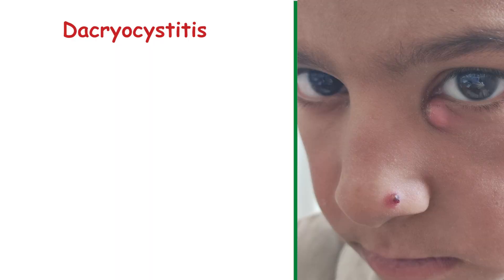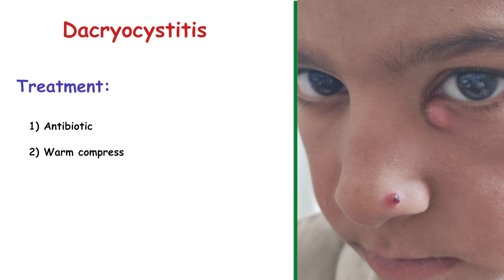There are several important treatments for dacryocystitis. Oral or intravenous antibiotics are the primary treatment for acute dacryocystitis to control the infection. Applying warm compresses to the affected area can help reduce swelling and promote drainage. In chronic cases, or when antibiotics do not resolve the infection, a procedure known as dacryocystorhinostomy, or DCR, may be performed to bypass the blocked duct.